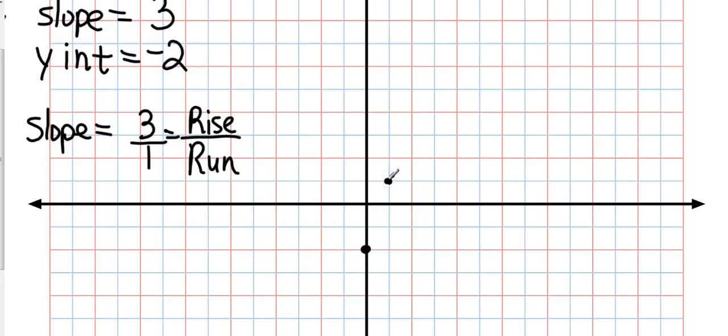And then I'm going to keep my point on that coordinate, because I always want 3 points and do the same thing: 1, 2, 3, run 1. And I have just graphed the line.